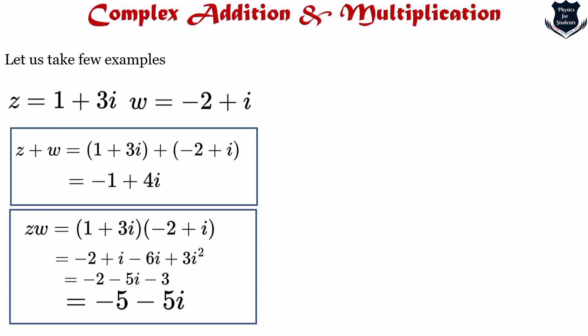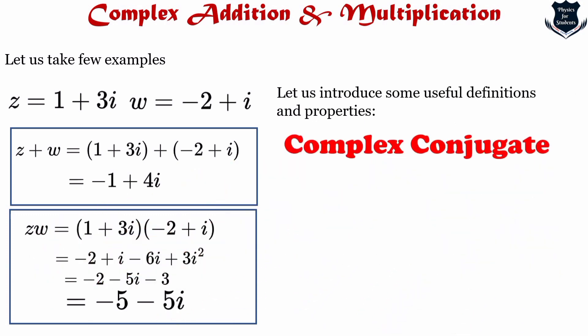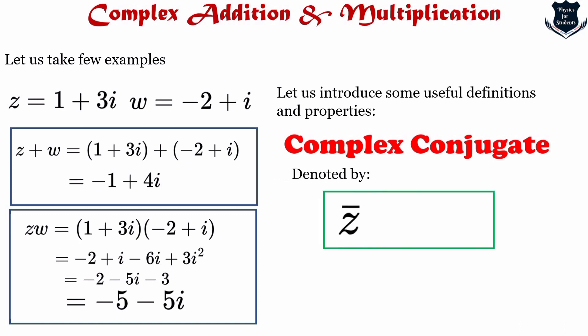Now that we know how to add and multiply complex numbers, we will introduce a useful definition and some properties. This might seem a little odd at first, but these will become very handy as we solve problems of quantum mechanics. The concept I am introducing is called the complex conjugate. We define the complex conjugate of a complex number with the symbol z-bar or z with a star or asterisk.